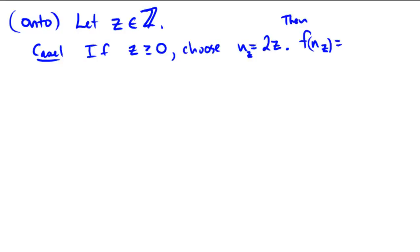What would f(n_z) be equal to? Then f(n_z) would follow the top rule, which was n_z/2. n_z was defined to be 2z/2, and that's equal to z. So I found an input that was sent to the output of z.